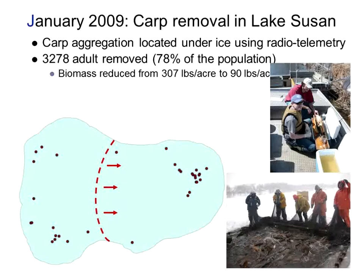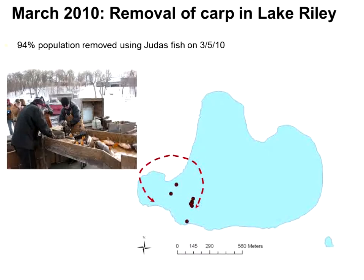We found that carp aggregate particularly in the winter months. In one example — Lake Susan — three-quarters of the population aggregated one spring, which we located with radio-tags. We hired commercial fishermen and were able to remove 80% of the population in one afternoon. In Lake Riley, almost the entire population aggregated in one bay, and we got the entire population in one afternoon. We removed about 3,000 fish, knowing that was 95% of the population, so we knew we didn't have to go back.